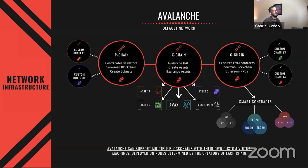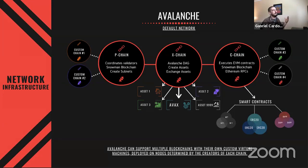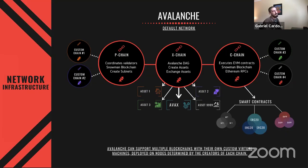The C-Chain is our smart contract chain — an instance of the Ethereum Virtual Machine, running on a linear blockchain with Snowman consensus. It is 100% byte-for-byte backwards compatible with existing EVM applications. If you're building with existing Ethereum developer tooling — Truffle, Remix, MetaMask, OpenZeppelin — it should be as simple as deploying your contract to our smart contract chain and pointing MetaMask at our C-Chain. You can do NFTs, ERC-20 token sales, DeFi, yield farming, and more.